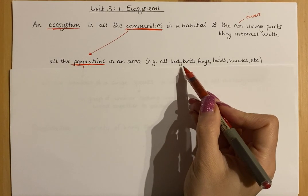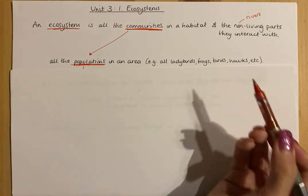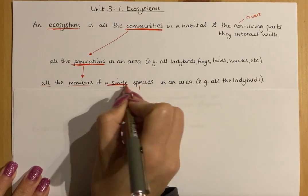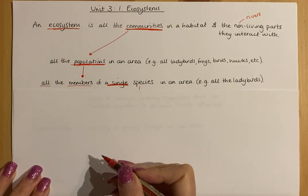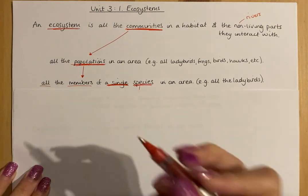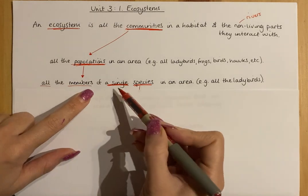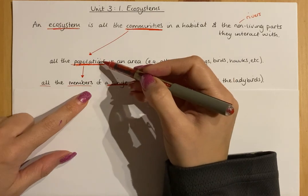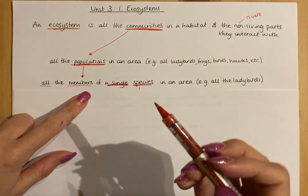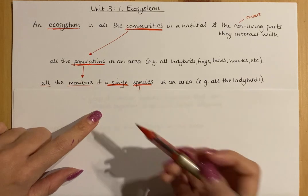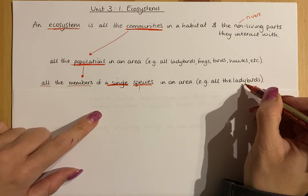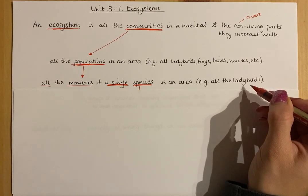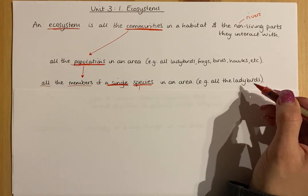Ladybirds would have a population, frogs would have a population, and so on. Populations are all the members of one species. The difference between population and community is that a population is of one species, whereas a community is all of the different species. So a population of ladybirds, a population of humans, a population of bats — a named single species.